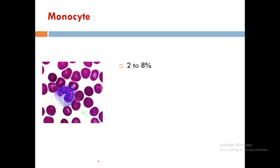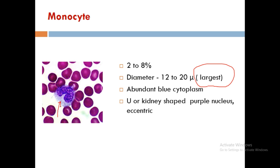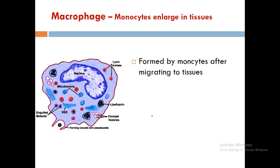Monocytes make up around 2 to 8 percentage of WBCs. With a diameter of 12 to 20 microns, monocytes are the largest blood cells. They have abundant blue cytoplasm and a kidney-shaped or U-shaped purple nucleus that is eccentric. They are phagocytic in nature and form macrophages in the tissue.